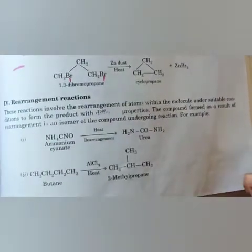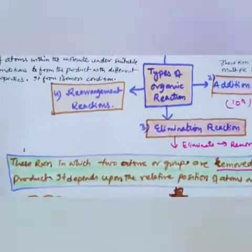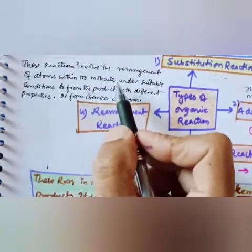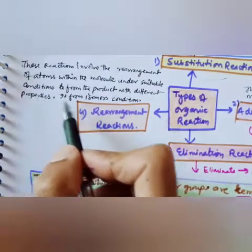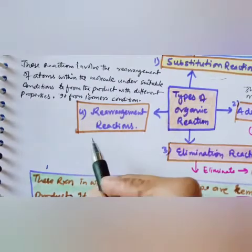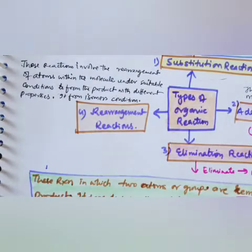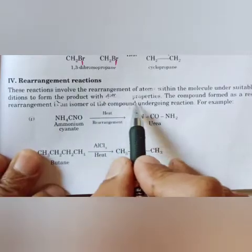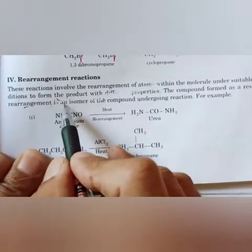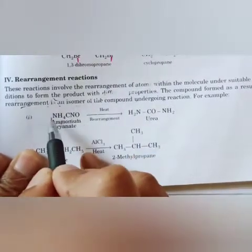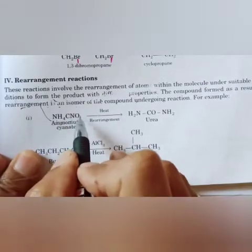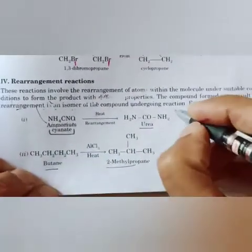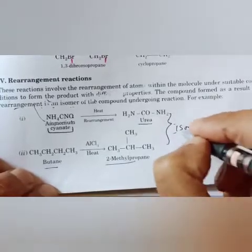The fourth reaction is rearrangement reaction. These are reactions that involve the rearrangement — adjustment — of atoms within the molecule under suitable conditions, forming a product with different properties. The compound formed is an isomer of the original compound: same chemical formula, different structure. For example, NH4CNO rearranges to NH2CONH2 (urea), and butane changes to 2-methylpropane.